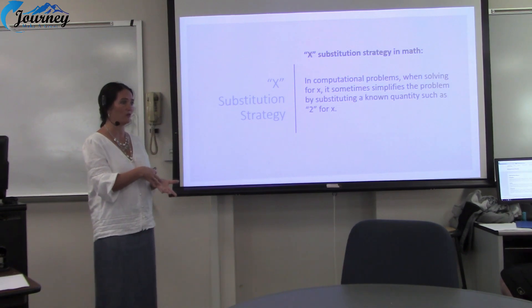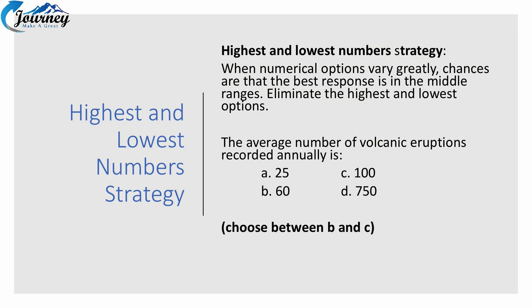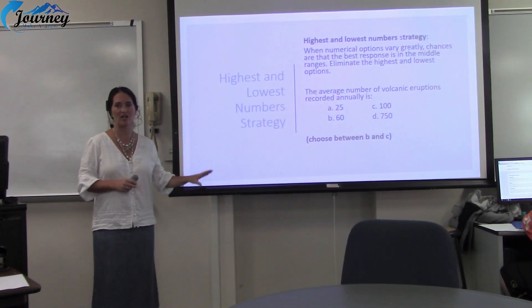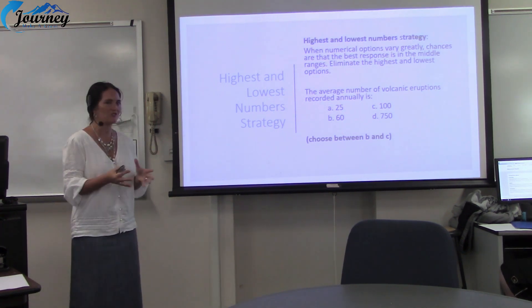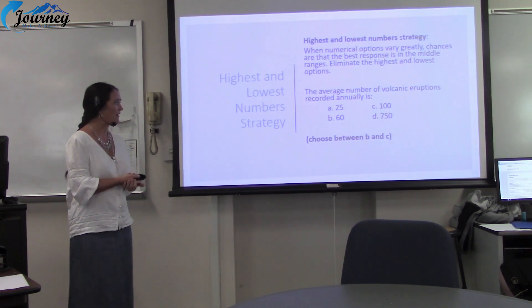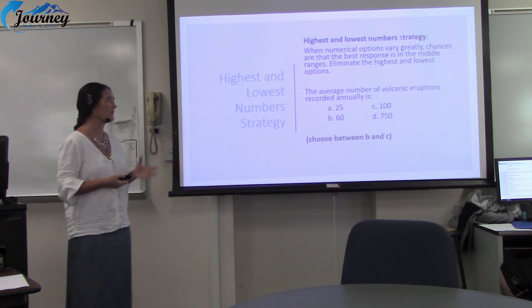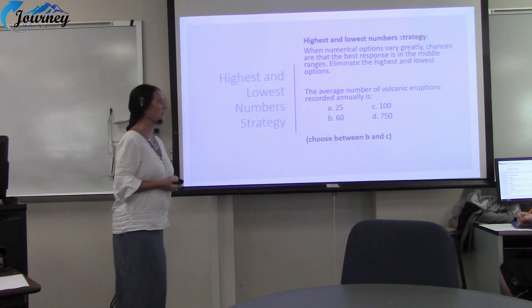Highest and Lowest Numbers Strategy: when you have number options given to you that vary greatly — there's a big variance — chances are that the best response is in the middle range. Take away your highest number choice and your lowest number choice, and you should be left with two in the middle. For example: 'The average number of volcanic eruptions reported annually' with choices 25, 60, 100, and 750. The 750 is your greatest — eliminate it. The 25 is the lowest — eliminate it. Then choose between the two in the middle: 60 and 100.